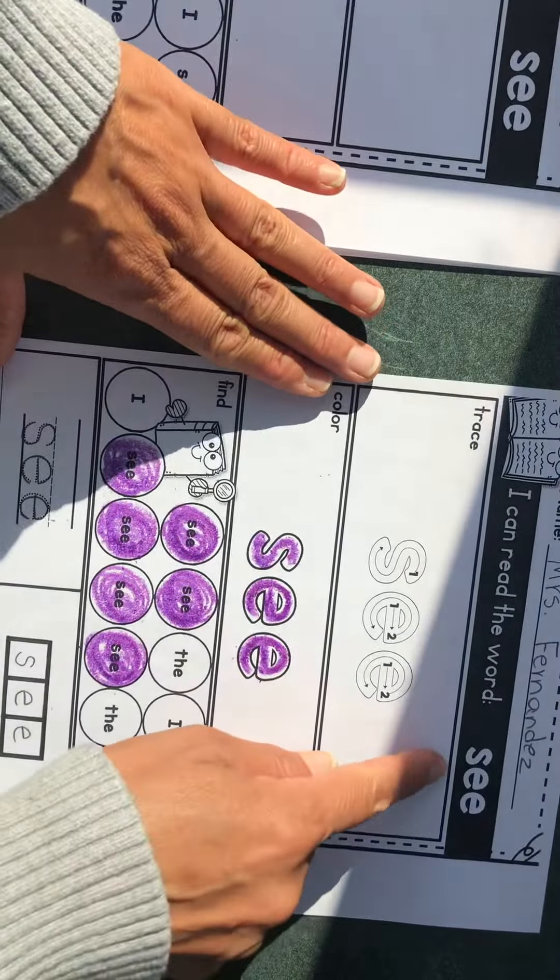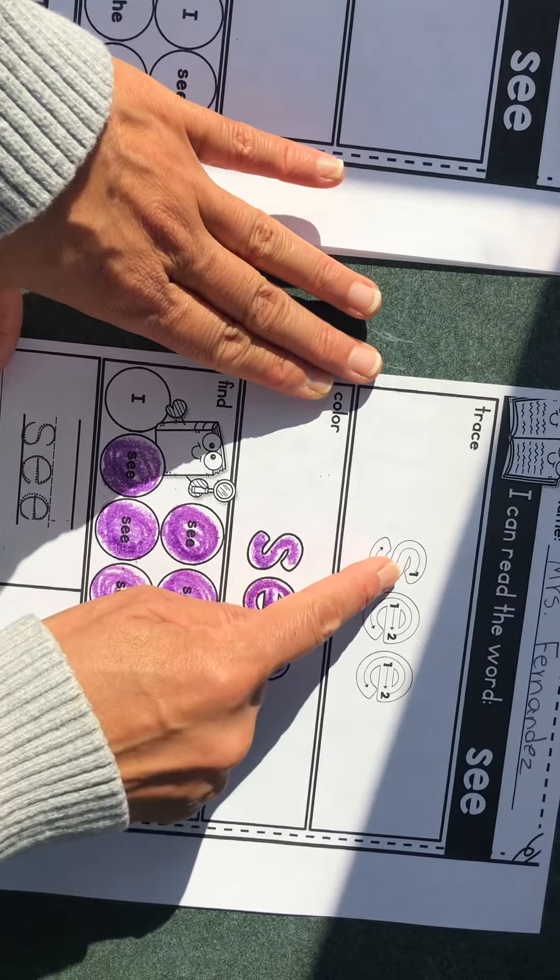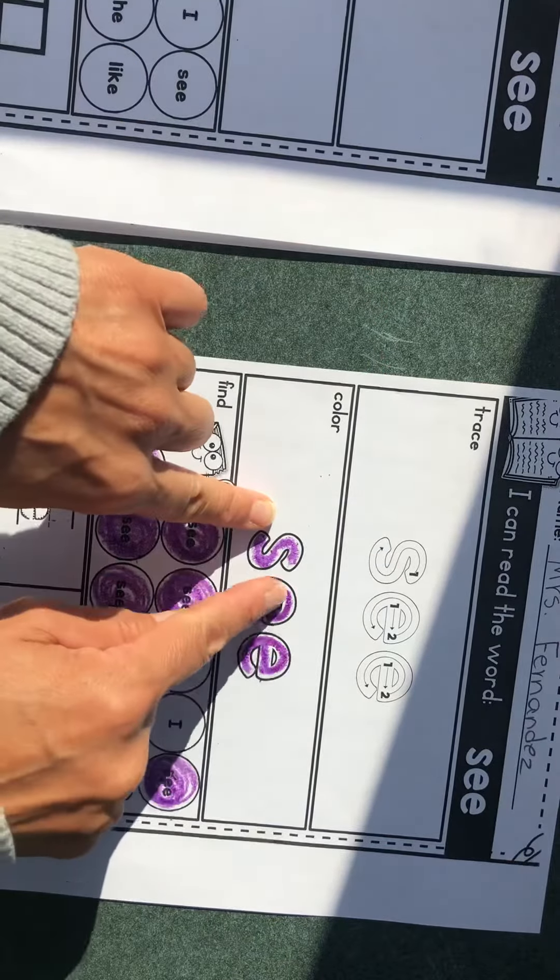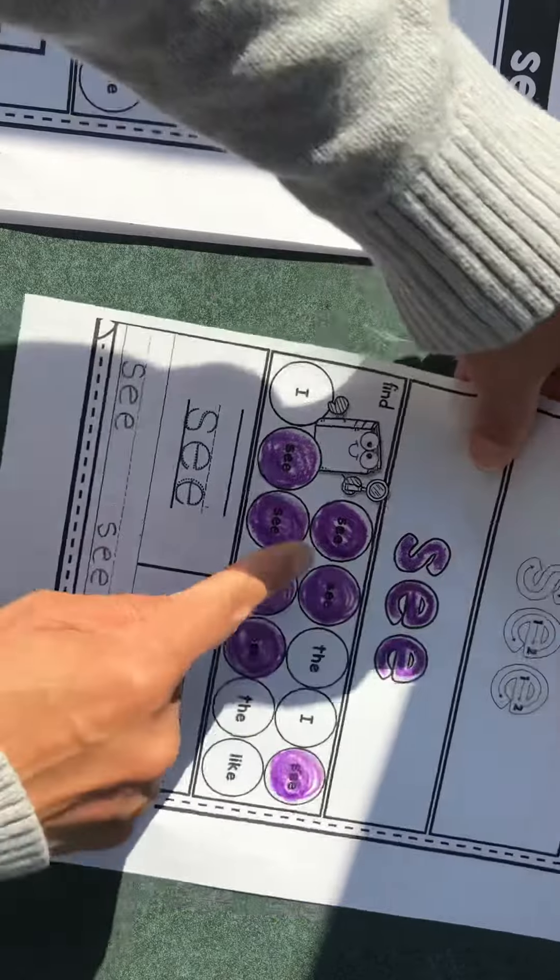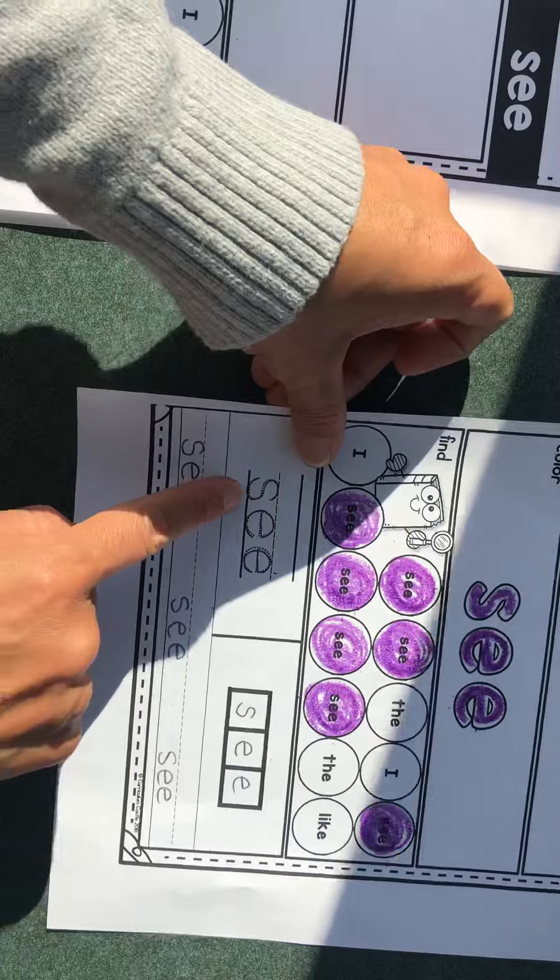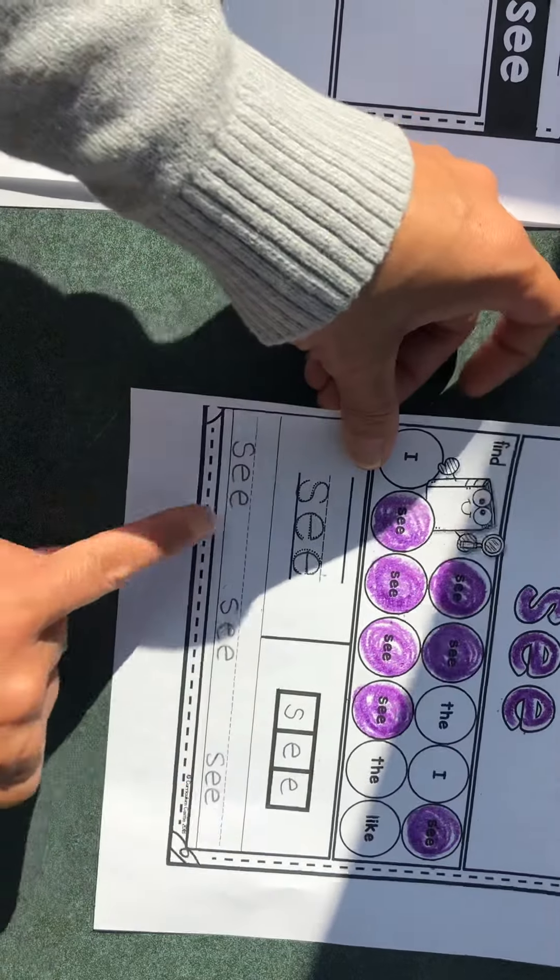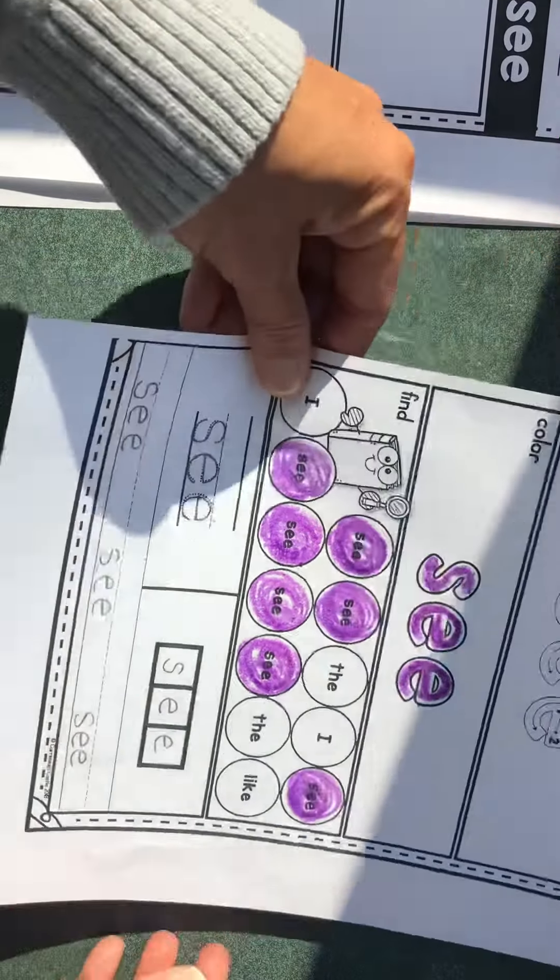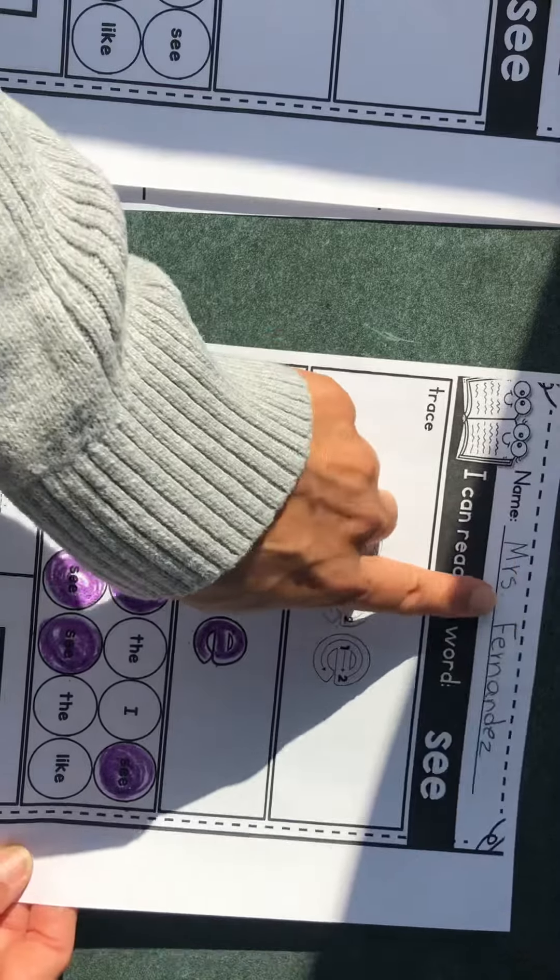Los niños tienen que poder leer la palabra de alta frecuencia, trazarla con su dedo, colorear con el color favorito de ellos, encontrar la palabra C. Y eso quiere decir ver, tienen que trazarla de nuevo, escribirla, y después escribirla tres veces abajo. Por favor, que escriban el nombre de ellos arriba.